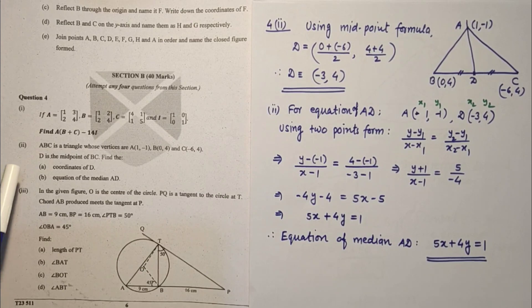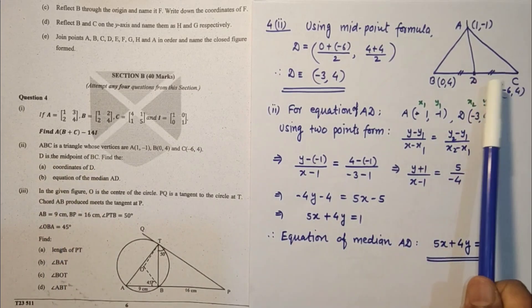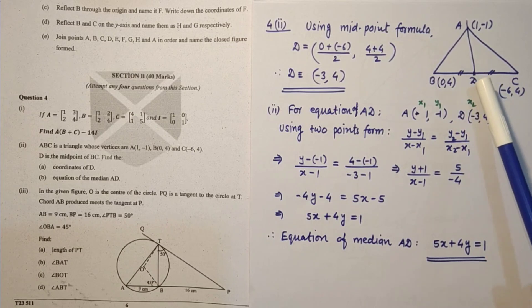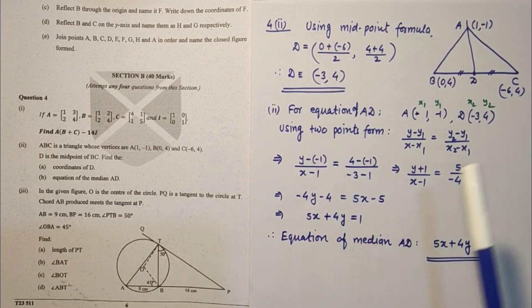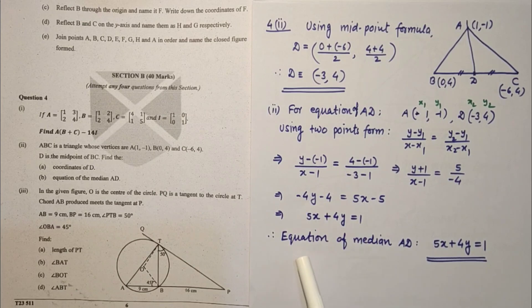Question 4 second sub part. A triangle is given whose vertices are this, D is the midpoint of BC. I have drawn the diagram. Using midpoint formula you will get coordinates of D which is minus 3 comma 4. For the equation of median AD, we know the coordinates of D and point A, so using two point form of line, after simplification we will get the equation of median AD is 5X plus 4Y equals 1, that is the answer.